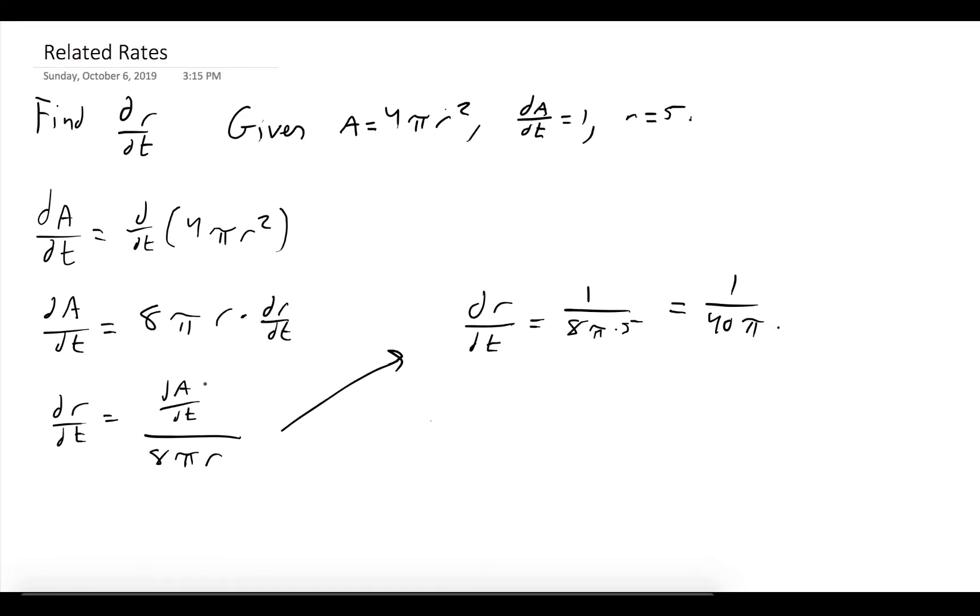Okay, so putting it all together, we can conclude that the radius decreases at a rate of 1 over 40 pi, which is just some number, but you can just leave it in this form. That's fine. 1 over 40 pi centimeters per minute, right? We know these units because these units were given to us in the word problem.